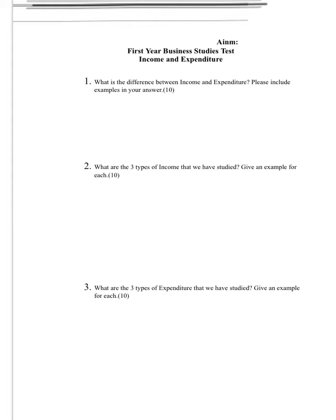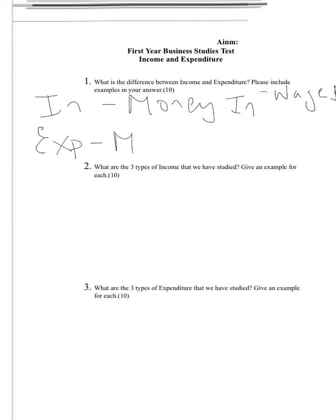The first question asks us what the difference is between income and expenditure. When we're doing this question, we must come up with our definitions for income and our definitions for expenditure, and we must not forget to give an example as well. Our definition for income is when money comes into a household — an example there could be something like wages. And expenditure is when money goes out of a household — an example could be paying a bill.